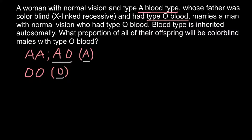Now let's consider the colorblindness status of this female — whether she carries this allele. Her father was colorblind. I'll use red color to designate the defective allele on the X chromosome. This is a recessive X-linked genetic disorder. So her father's genotype was X^defective Y — a defective X chromosome paired with a normal Y chromosome.